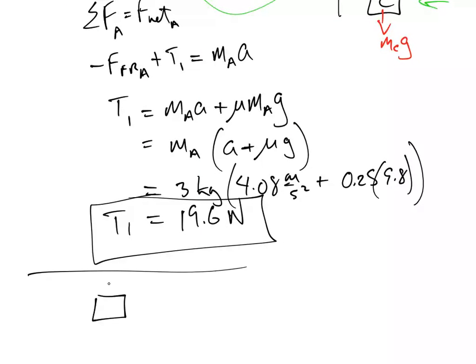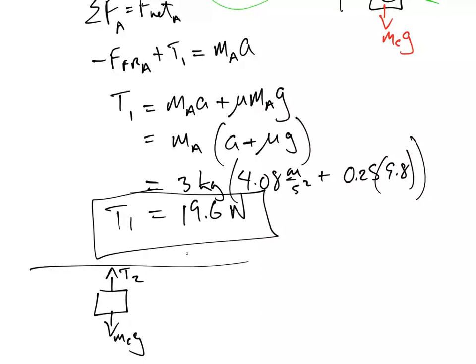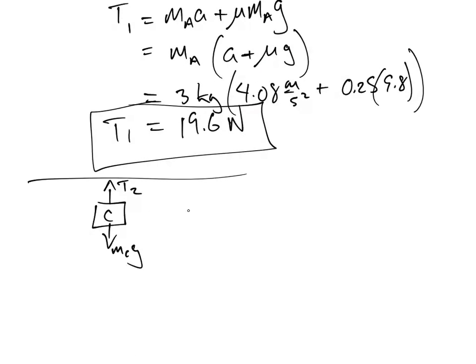So, here's the free body diagram. There's the T2. There is mC g. And this is mass C. And of course, we know down is positive now. So, we've got negative T2 plus mC g is equal to that. That, of course, once again, this is summation of the forces is F net.